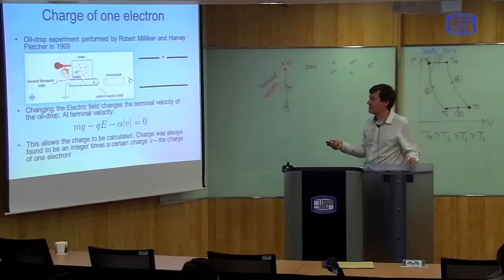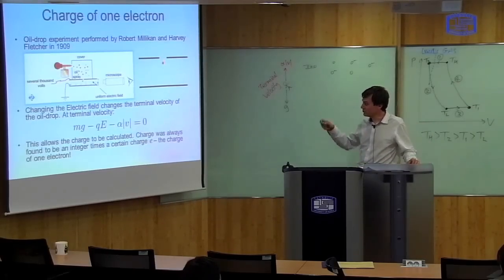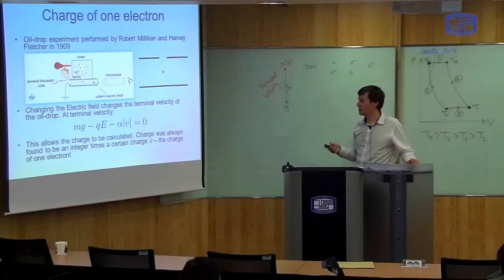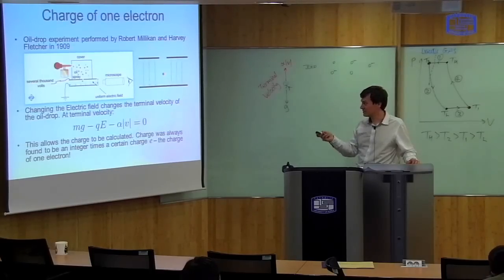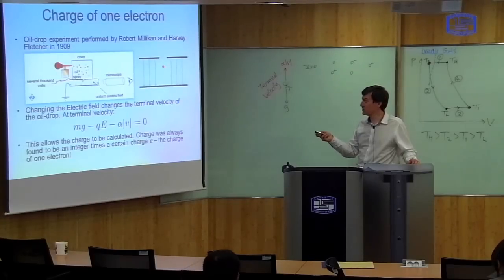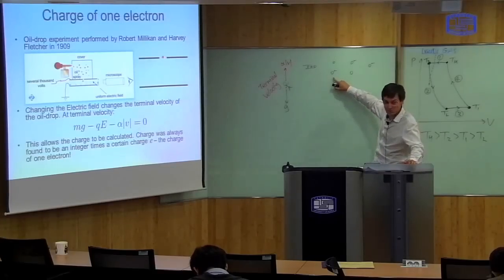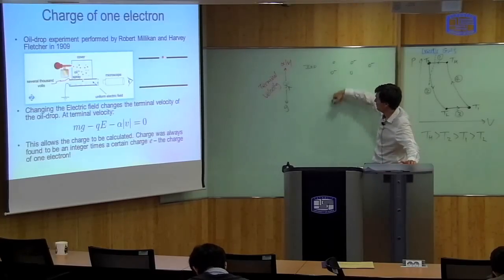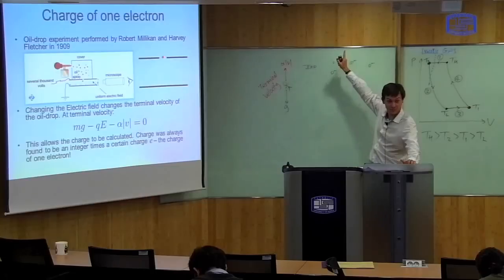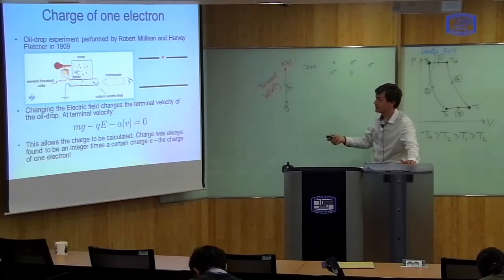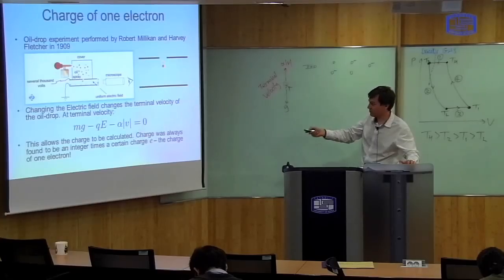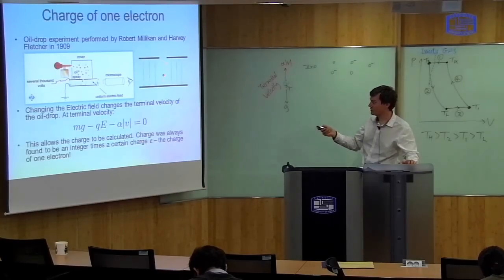By measuring how fast it falls, the force of gravity should equal the resistance force. So by measuring how fast it falls, you can measure the constant alpha. Now the clever bit: after it falls, you turn on an electric field. If the electric field is going downward, and the particle is negatively charged, the particle will feel a force going upward. So you let it fall through gravity first, measure the constant alpha, turn on the electric field, and then it goes up.